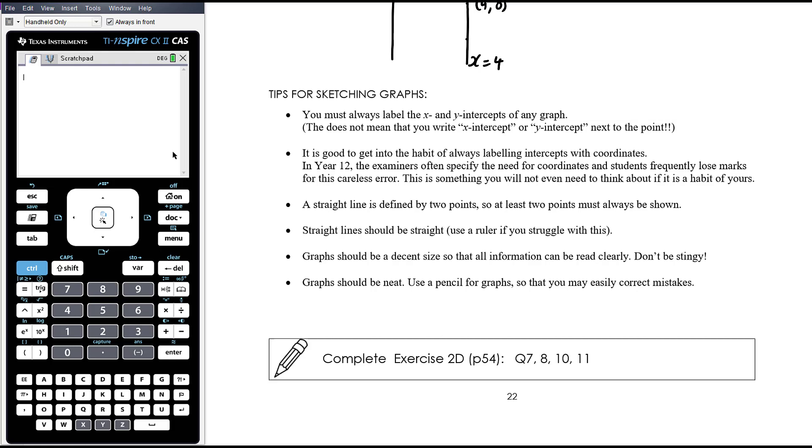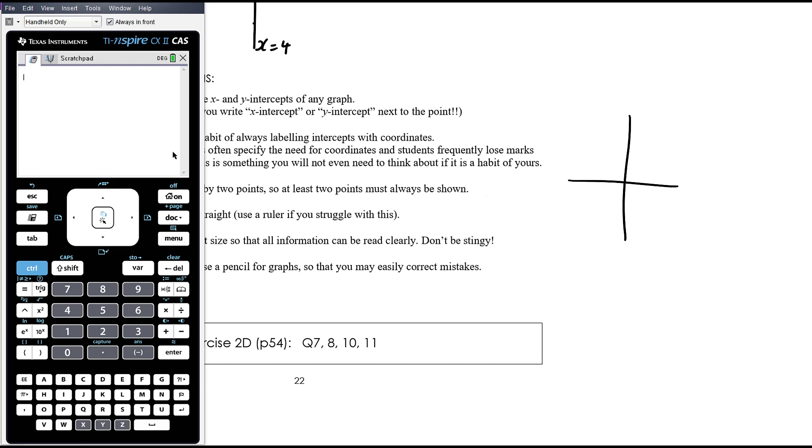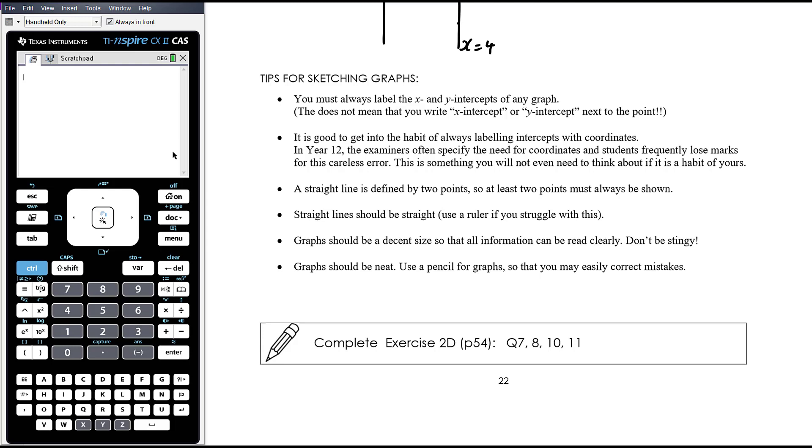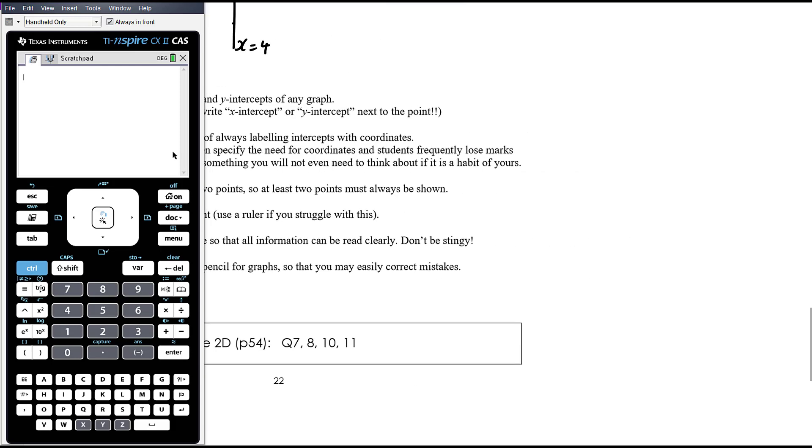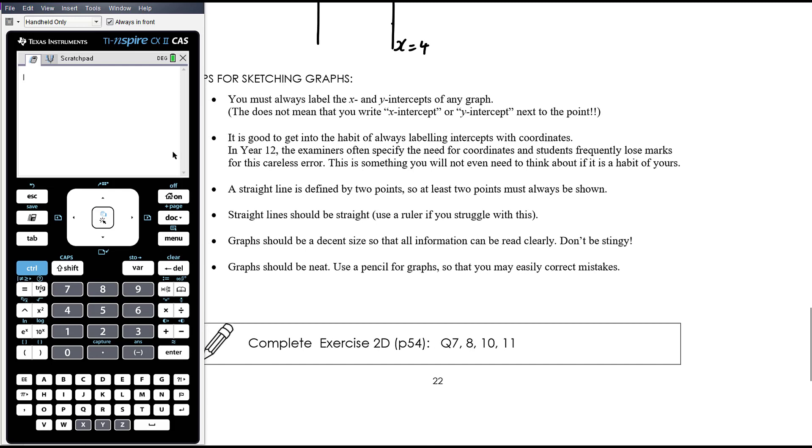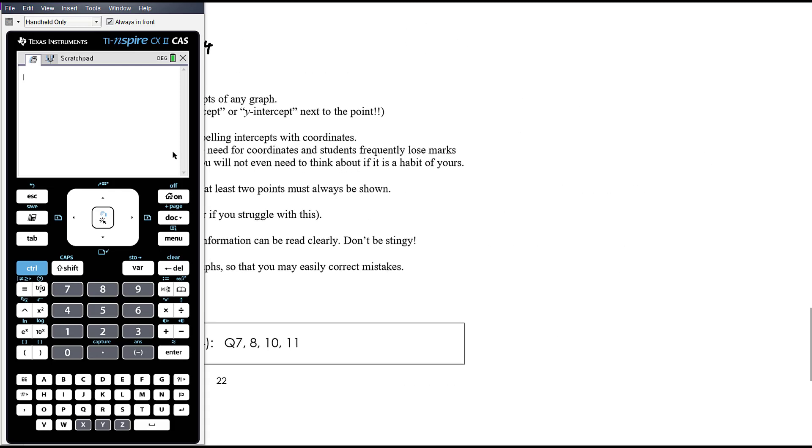A straight line is defined by two points, so at least two points must always be shown, particularly where the x and y intercepts are the same point or a horizontal or vertical line. In the case of a horizontal or vertical, I'd say one point and just label it with the equation would be enough. Straight lines should be straight. Use a ruler if you struggle with that. Graphs should be a decent size so that all information can be read clearly. Don't be stingy. I see like students draw these graphs and then they draw this tiny little pathetic thing with an x and y intercept. Why not just draw that like that so we can actually see it? Make it clear. You're not short of paper. I know we want to be environmentally sustainable and all of that, but they don't need to be huge. It's about how you think about your scaling. Graphs should be neat. Use a pencil so that you can correct your mistakes.